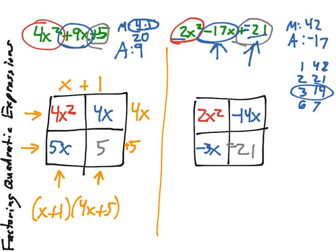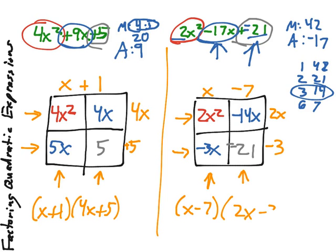So, now, let's go through and factor our rows and columns. In this first column, our common factor is x. Second column, our common factor is negative 7. First row, we can get 2x. And our second row, I can get negative 3. So, our factors here are x minus 7 and 2x minus 3.